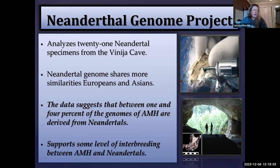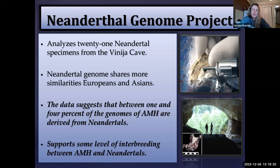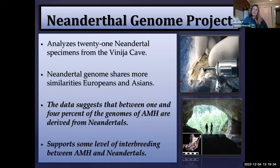The data suggests between one and four percent of the genomes of anatomically modern humans are derived from Neanderthals. This study supports at least some degree of interbreeding between anatomically modern Homo sapiens and Neanderthals living in Europe during the overlap period — roughly 40,000 to 30,000 years before present. This was a big deal because it called into question whether we should consider Homo neanderthalensis and Homo sapiens completely separate species.